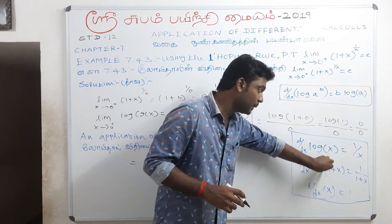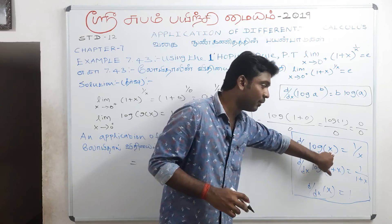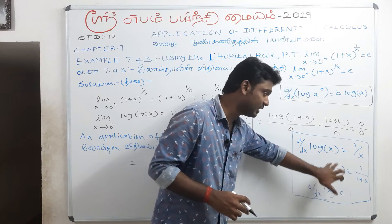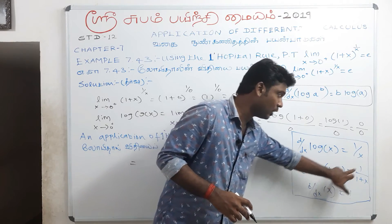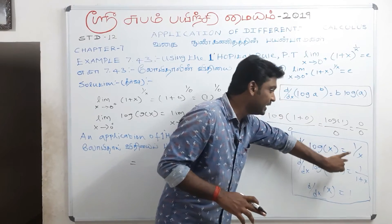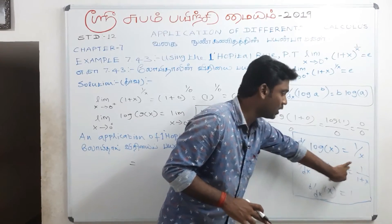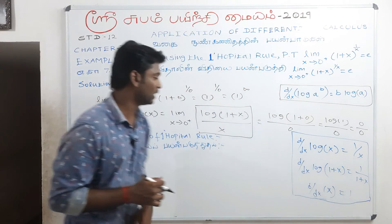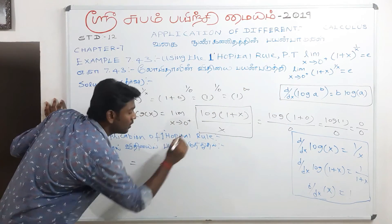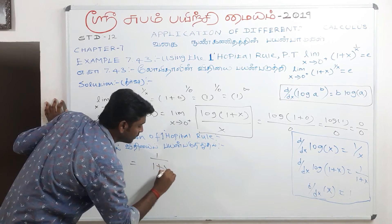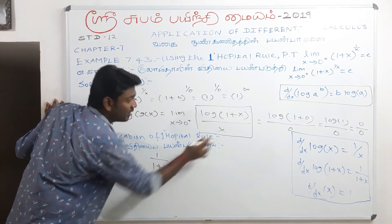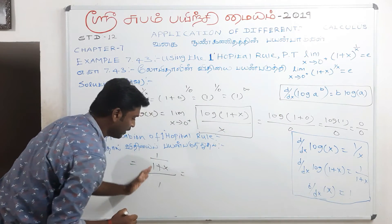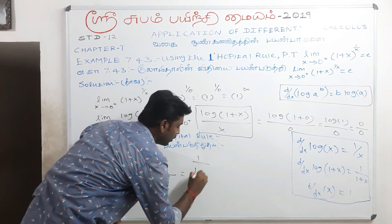Differentiating the numerator: d by dx of log(1 plus x) equals 1 divided by (1 plus x). Differentiating the denominator: d by dx of x equals 1. So the expression becomes 1 divided by (1 plus x), all divided by 1, which simplifies to 1 divided by (1 plus x).